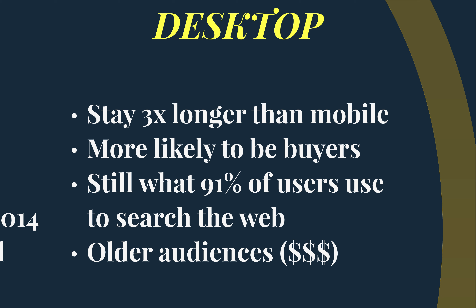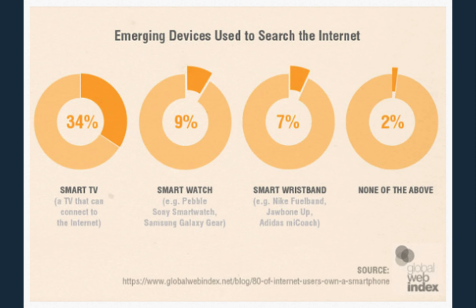These users tend to be older, and buying power tends to be connected with age. It's also important for us to pay attention to emerging devices like smart TVs and smart watches — these statistics are actually pre-Apple Watch, so that's only grown. It's very important to pay attention to what search is looking like on emerging devices.